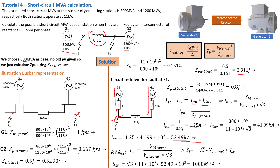Remember, the problem stated an estimated short circuit MVA of 800 MVA on this side. But when we calculate, we're getting 1000 MVA — precisely because generator 2 is also contributing now. Fortunately, the reactor is dampening the contribution from G2, limiting the short circuit current coming from that side. If we repeat this calculation without the reactor, this value would be very high. You can try that exercise — you'll get a short circuit MVA of 2000 MVA, which is 800 plus 1200 MVA.